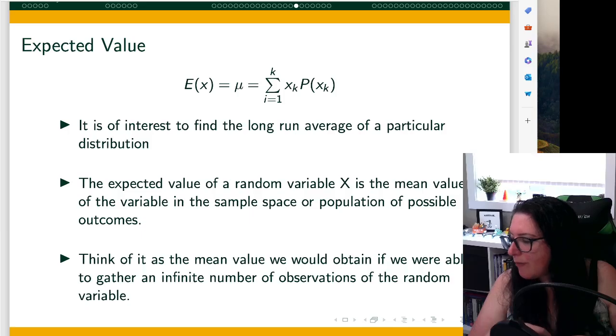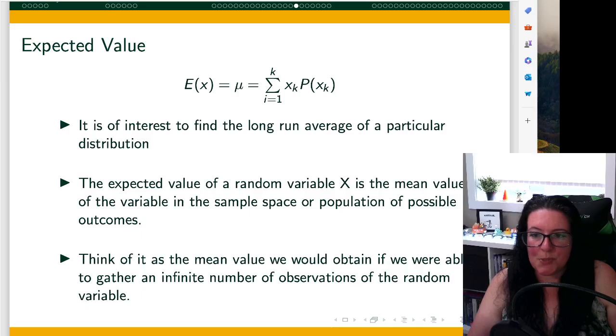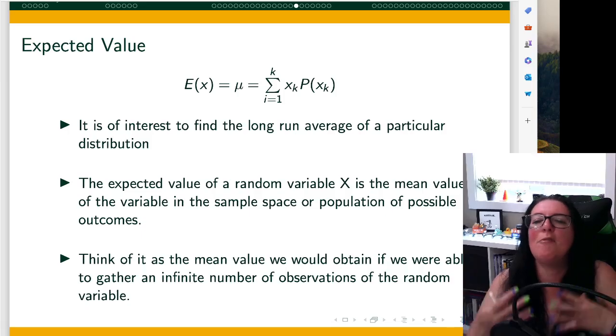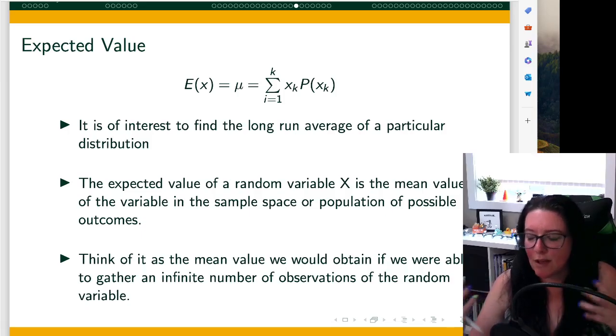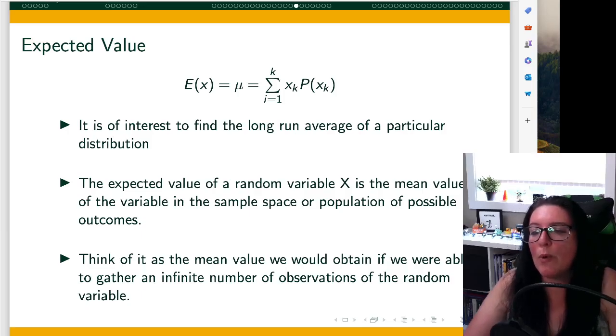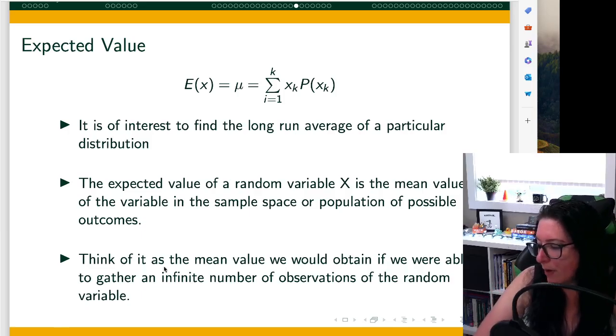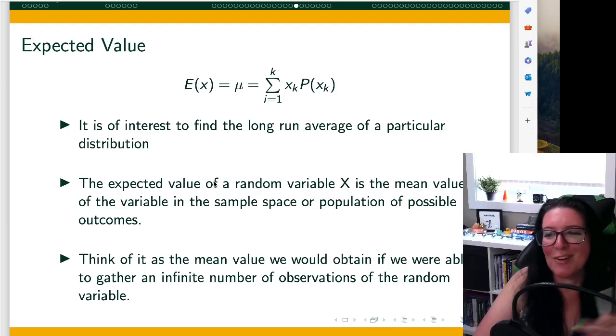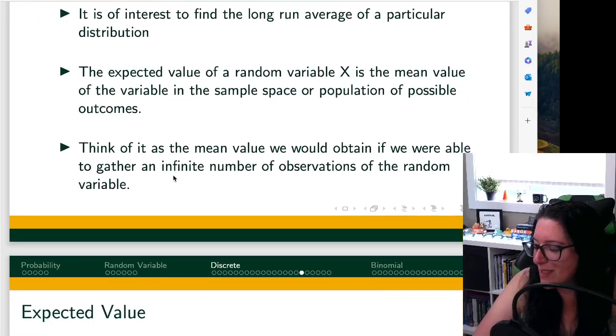The expected value of a random variable is the mean in that sample space. We think of the mean as if we were able to gain an infinite number of observations of this random variable, what would be the average, what would be the one that typically occurs?